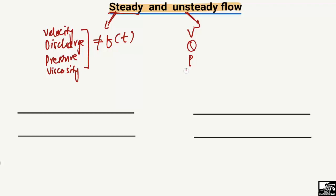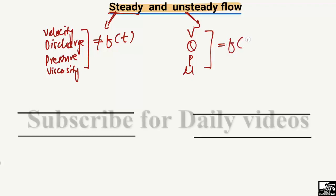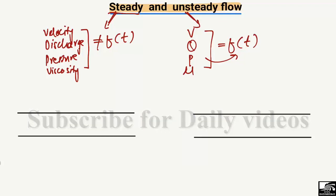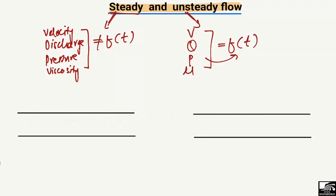On the other hand, when these properties — velocity V, discharge Q, pressure P, and viscosity μ — are changing with respect to time, meaning they are a function of time, then such type of fluid flow will be known as unsteady flow in the pipe.